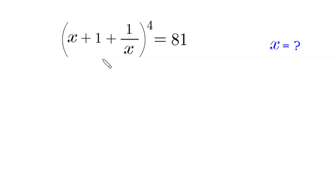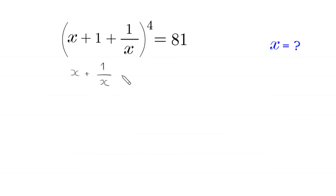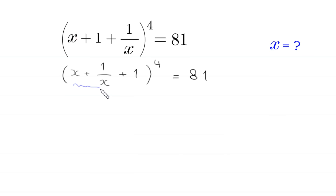Hello everyone, welcome. We will solve this very nice algebra equation: (x + 1 + 1/x)^4 = 81. Our job is to find all possible values of x. We rewrite this as (1/x + 1)^4 = 81, and now we suppose that x + 1/x is equal to t.